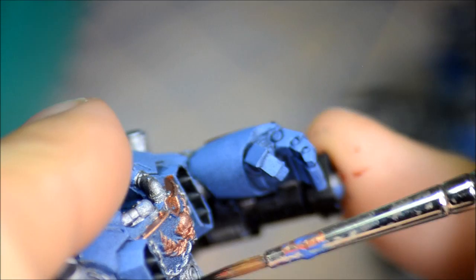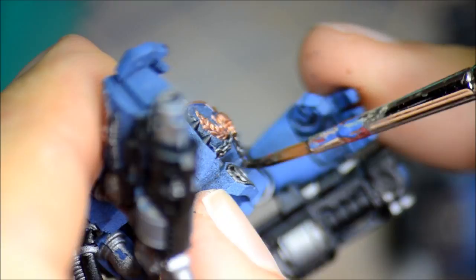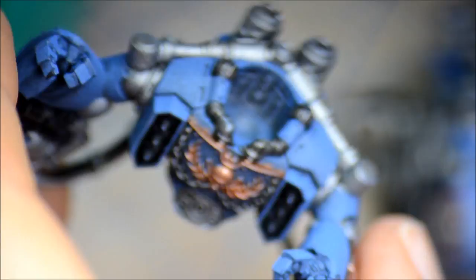Nuln oil on all the silver areas. Nice liberal wash here just to get the silver looking a bit more realistic. As well, giving a bit of a black outline to anything that contrasts with the blue, for example, those chains there and these piston reinforcement things around the neck.